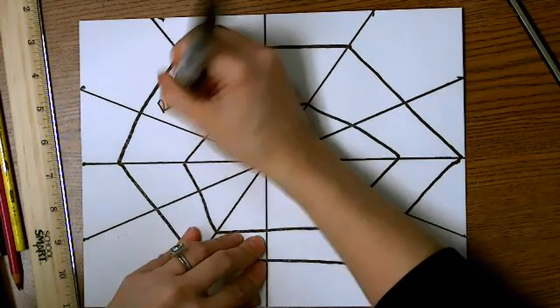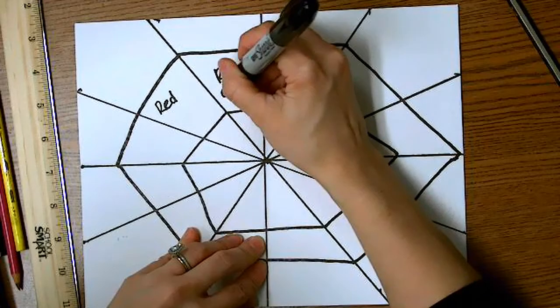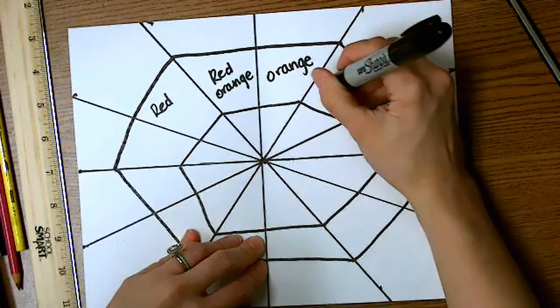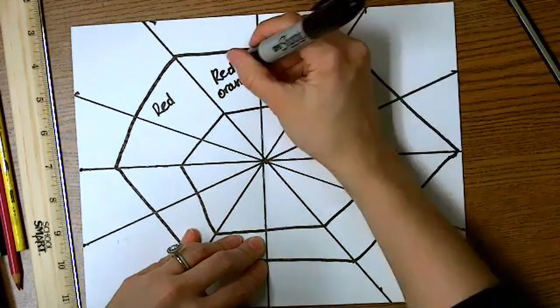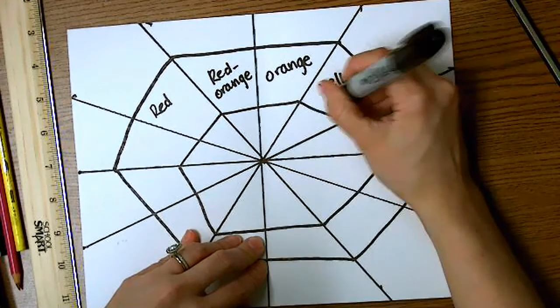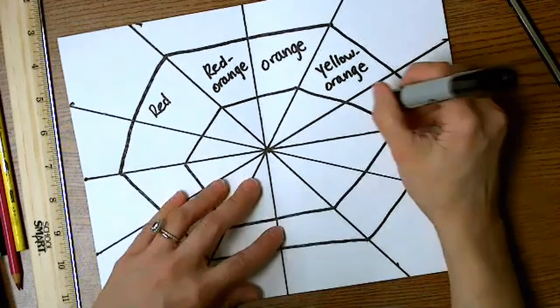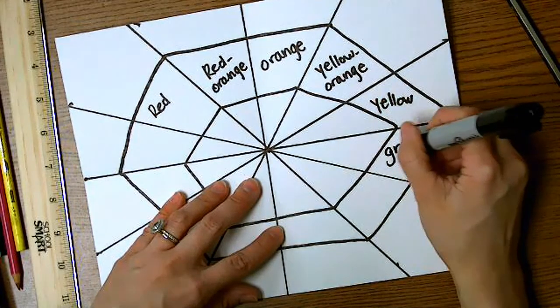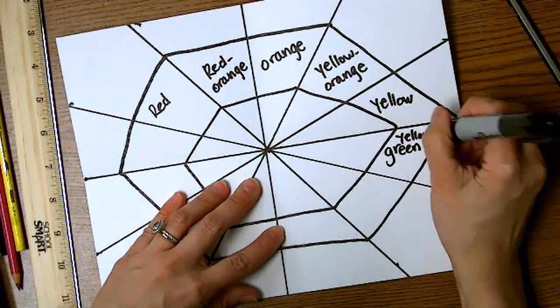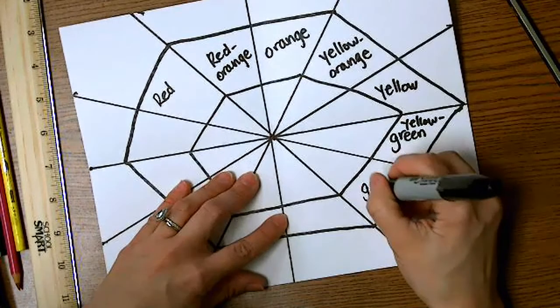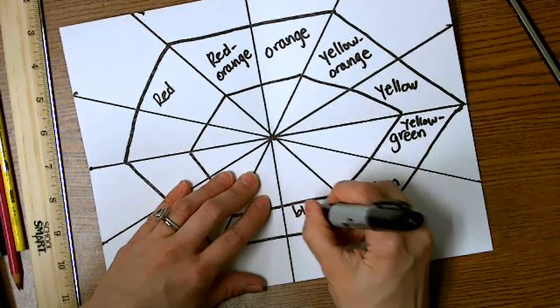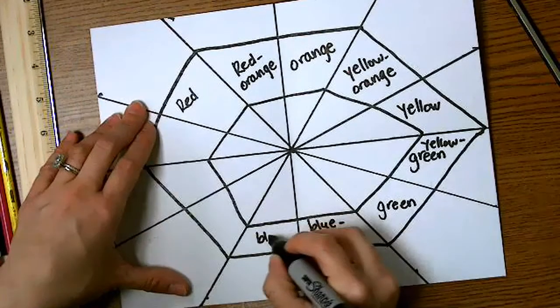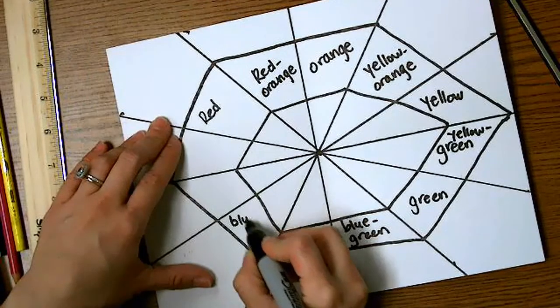Now we're going to label it. We're going to label it in the order that the colors fall on the color spectrum. And it is absolutely vital that you order them in this order. You can start wherever you like, but they have to be in this order. Otherwise, your color wheel will not work properly and you will not be able to blend the colors on the next step.